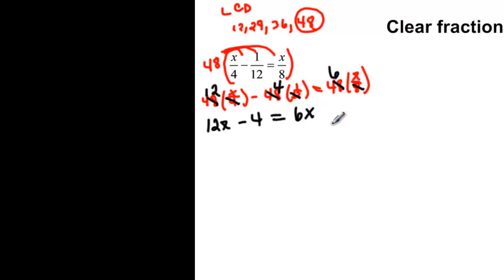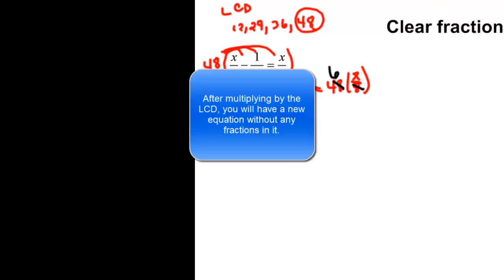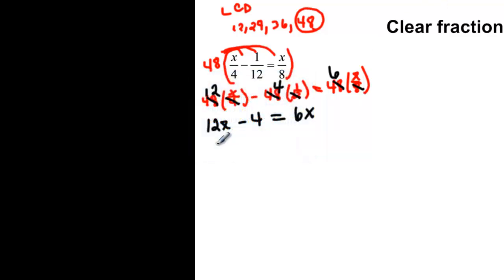Now we're ready to solve. When you multiply by the least common denominator, when you get done you should end up with an equation that has no fractions, which is exactly what we have here. So now we are ready to combine like terms and add and subtract across the equal sign.